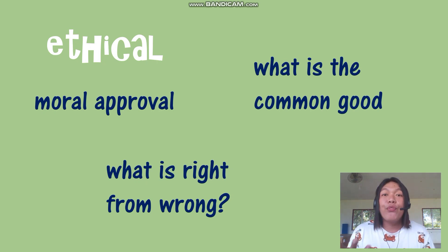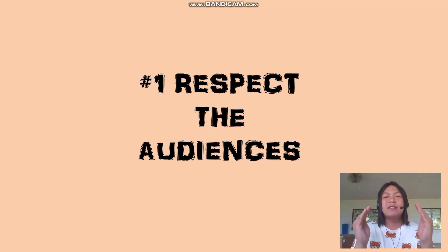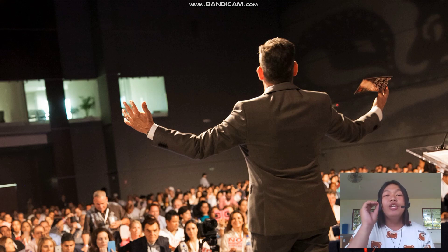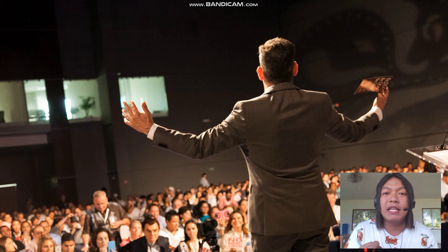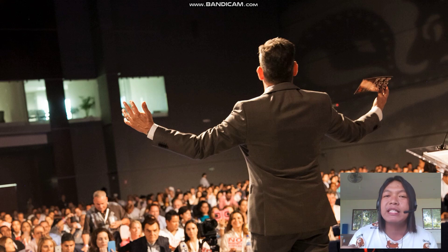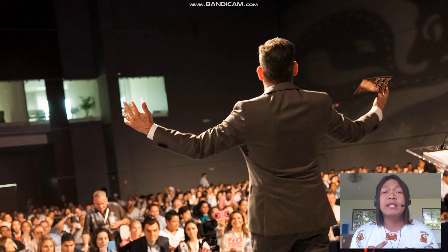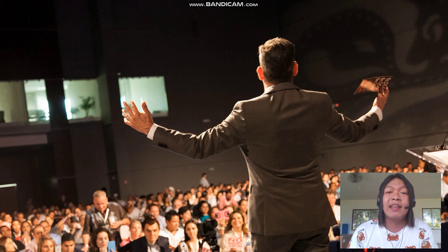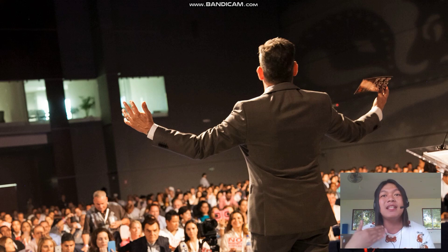So here are the best things for you to do in communication for the common good. First, respect audiences. How do we respect audiences when we communicate or when we speak? You should consider their background knowledge and their level of attainment in education. For example, whenever you are talking to someone who has a lower educational attainment than you, you should not use words that are difficult to understand. Instead, use friendly words so that they can understand what you are saying — and that makes communication effective.